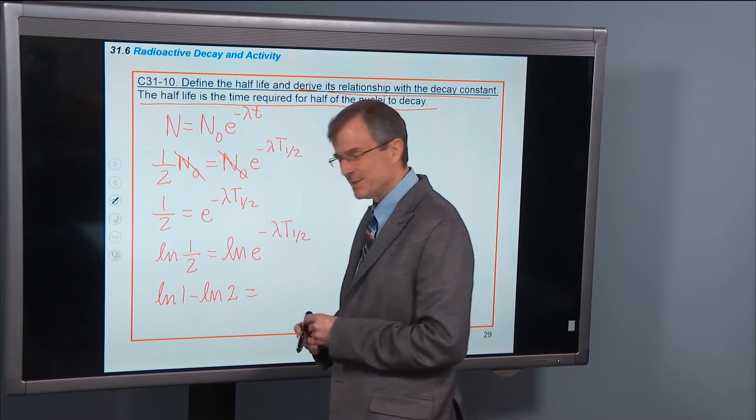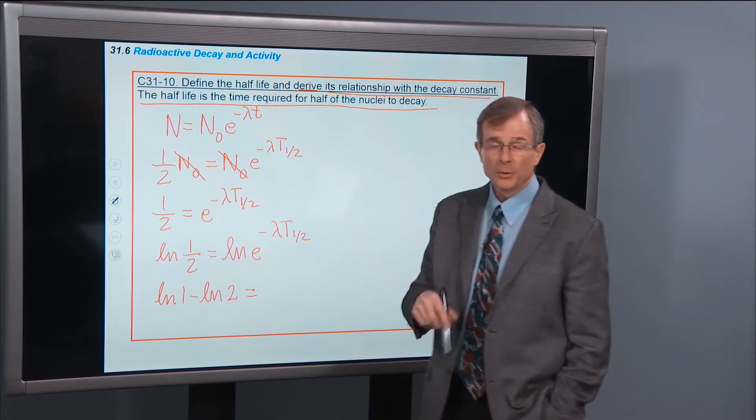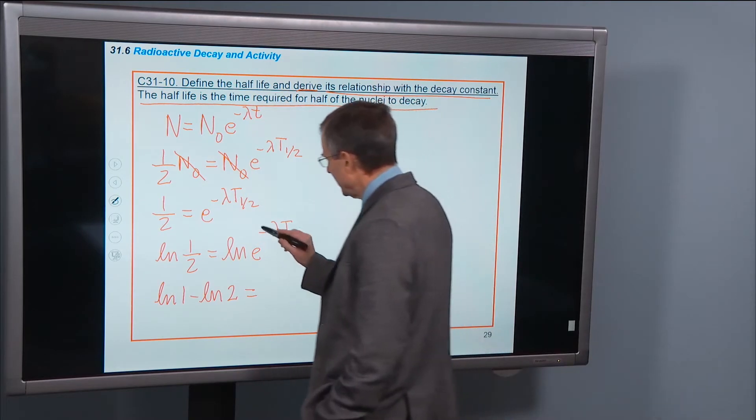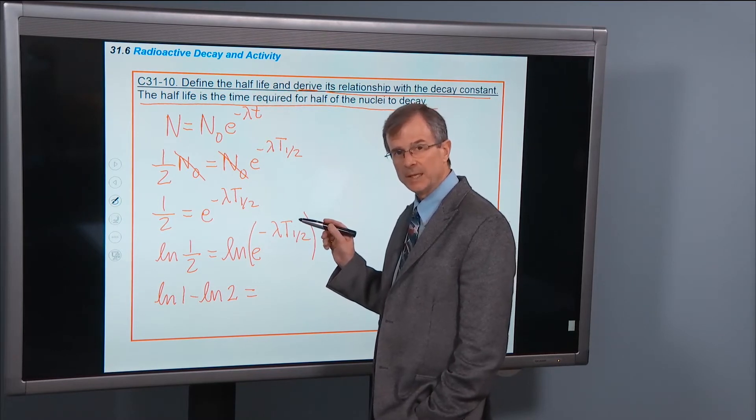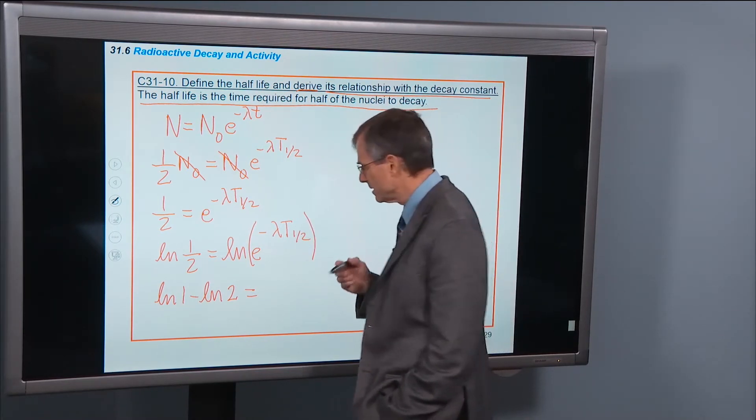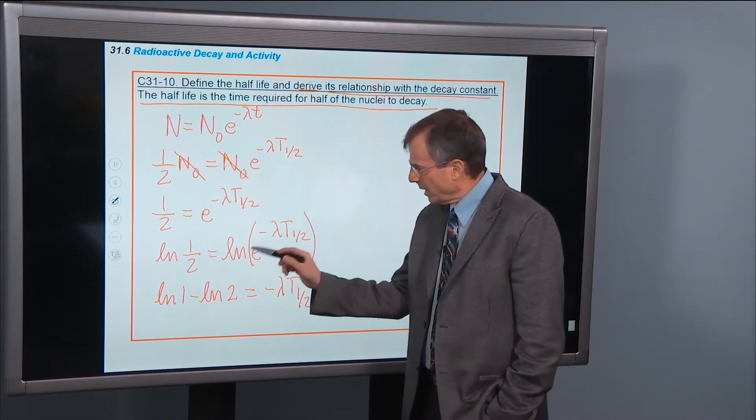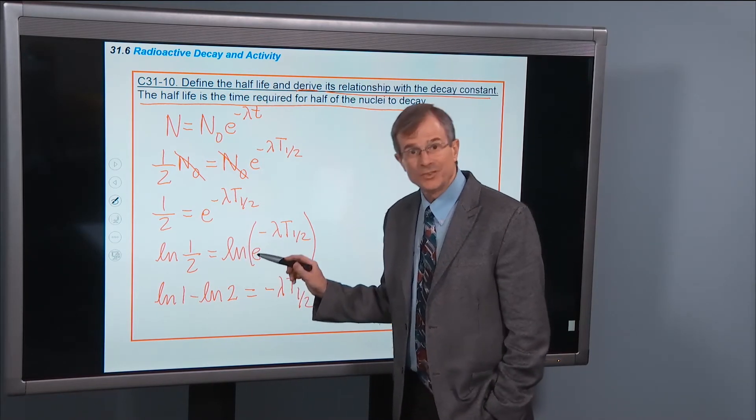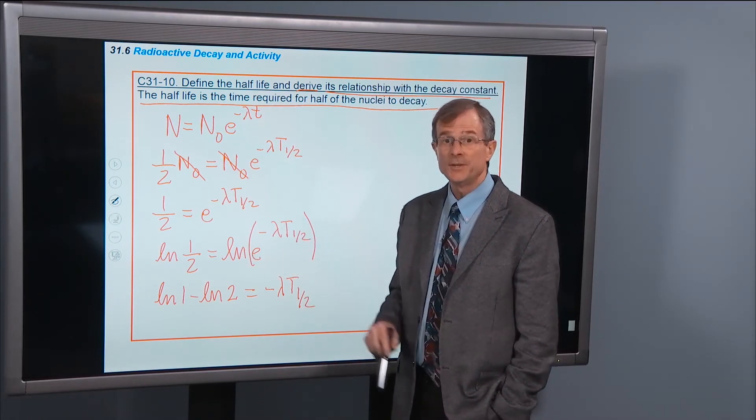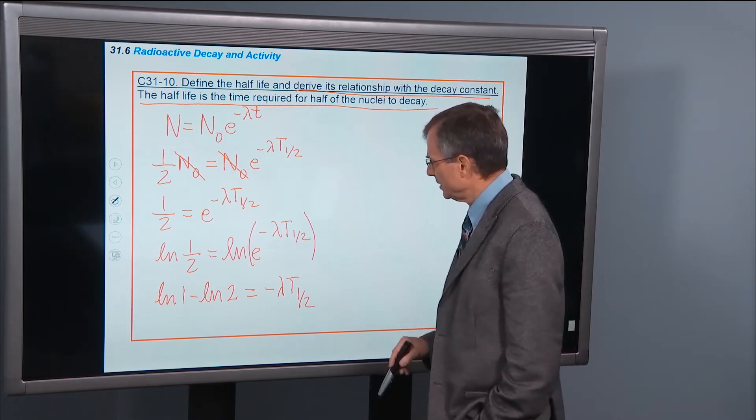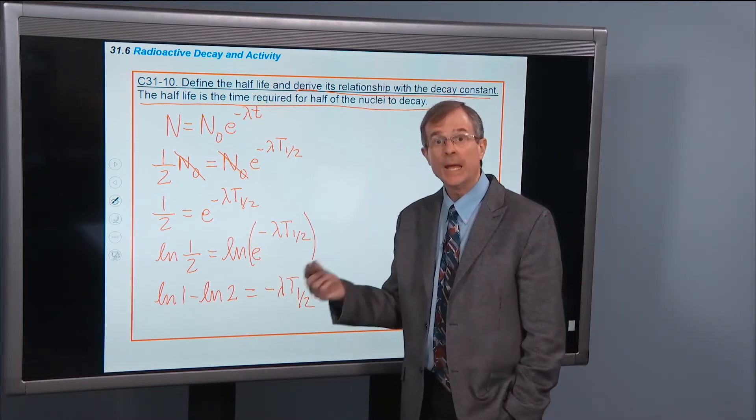Another property of the logarithm, and the real reason why we took logarithm of both sides of this equation is that if you take the logarithm of an exponential of something, what you get is that something. So the logarithm undoes whatever the exponential does. The exponential does something to this minus lambda t 1 half, but the logarithm undoes what it's done. So the log of e to the x is just x, and the log of e to anything is just that thing.